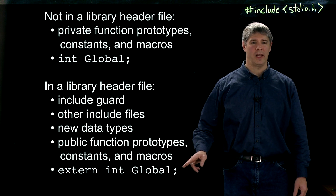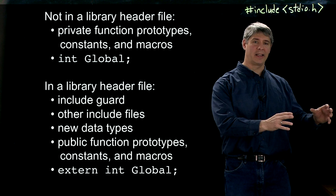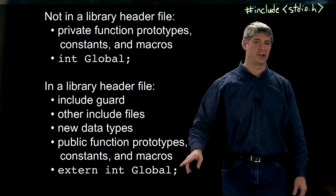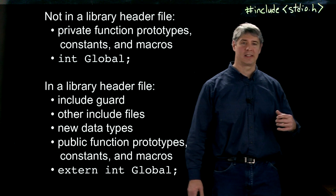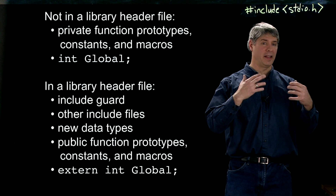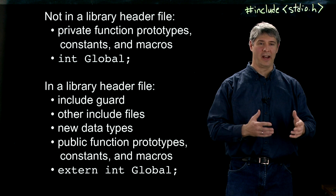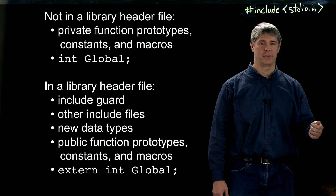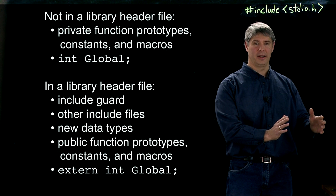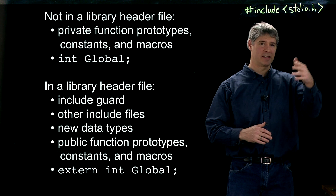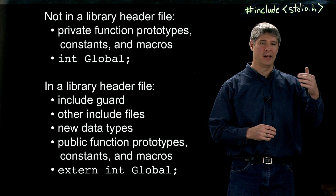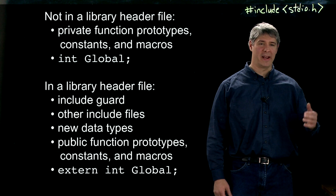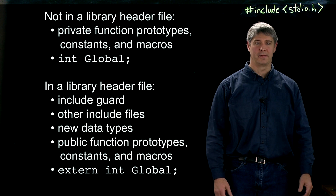Finally, rather than `int global` — which actually allocates space — you can use `extern int global` in the header file. The `extern` keyword means you are not allocating space here; you're simply declaring that a variable named global exists and should be accessible. So you're declaring it, but not defining or allocating space for it. If your C helper file defines and allocates that space with `int global`, putting `extern int global` in the header file makes that variable available to outside C files.